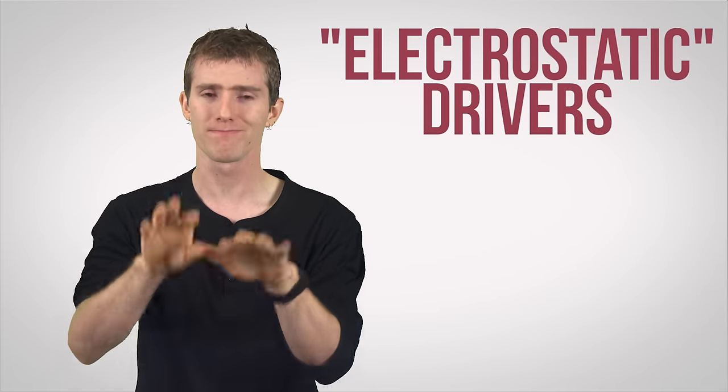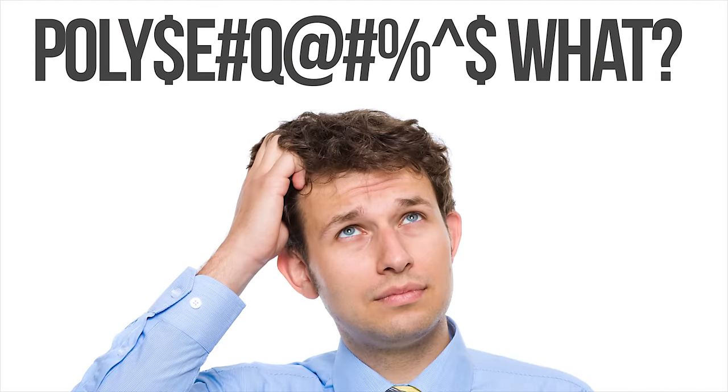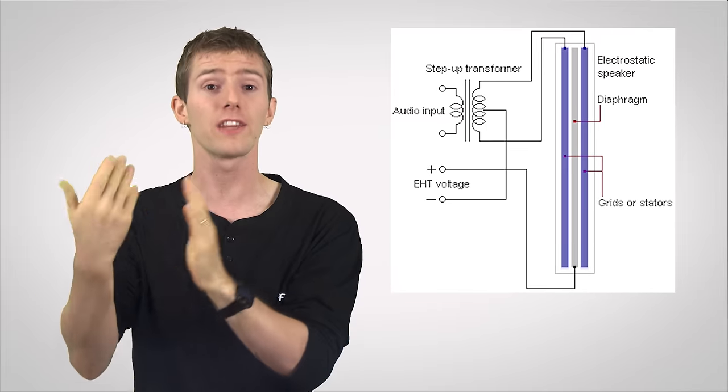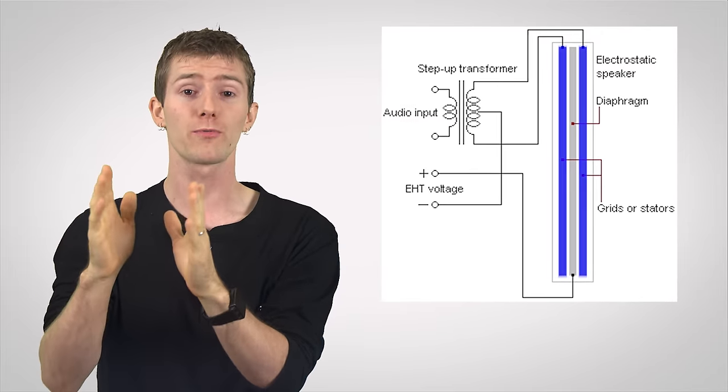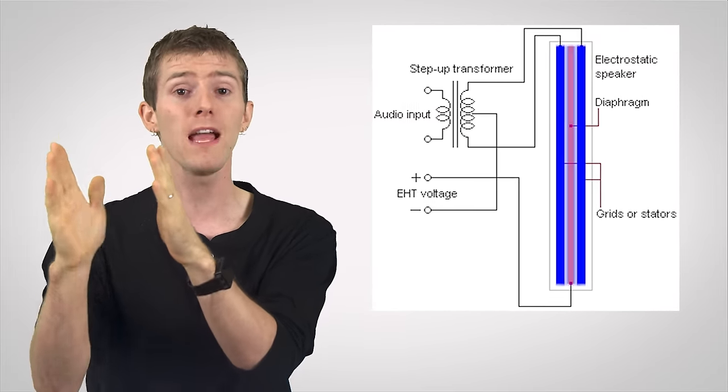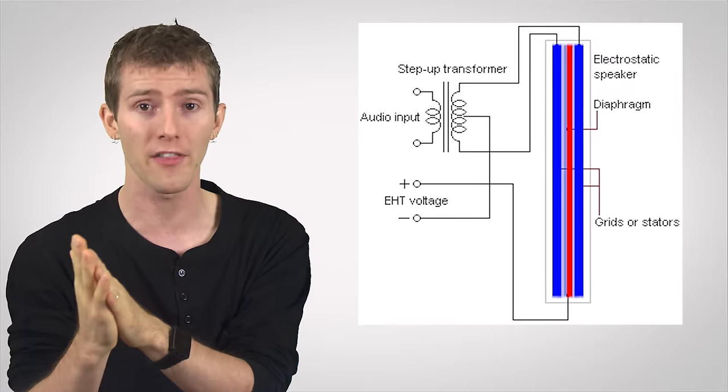Electrostatic drivers, they're a little different. They consist of a thin diaphragm, typically made of coated polyethylene tetraphthalate film, which is electrically charged and suspended between two perforated metal plates, or electrodes. The electrical sound signal is applied to the electrodes, which produces an electric field between them, and draws the diaphragm towards one plate or the other.